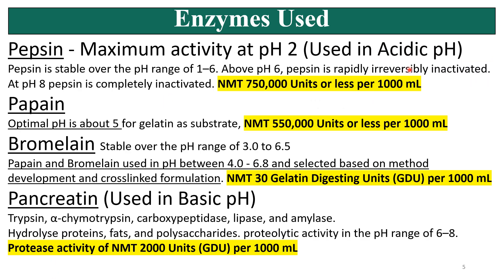Coming to the enzymes used in dissolution testing of formulations containing gelatin, like hard gelatin capsules and soft gelatin capsules — these are pepsin, papain, bromelain, and pancreatin. Pepsin shows maximum activity in acidic pH and is used within limits as per the guidelines — not more than 750,000 units per liter as per USP. Pepsin is used when the media pH is about 5, with a limit of not more than 550,000 units.